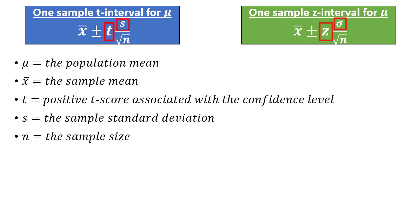The specific t-score we will use depends on our level of confidence — such as 90%, 95%, 99%, etc. — as well as the degrees of freedom, which are n-1. The best way to show how it all works is to look at an example, so that's what we'll do now.